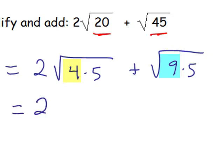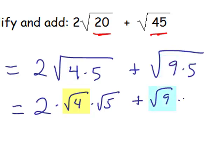The 2 that we already have out in front is unaffected by this. It will be patient and wait, and we've got 2 times the square root of 4 times the square root of 5 plus the square root of 9 times the square root of 5.